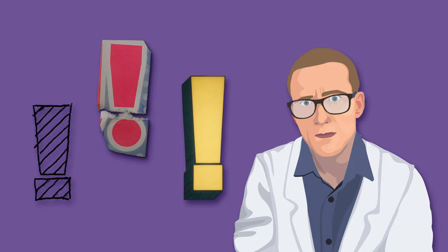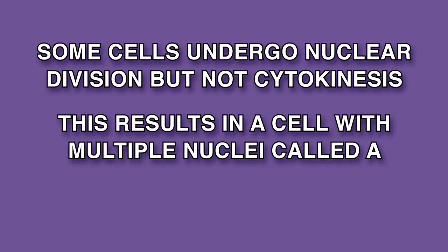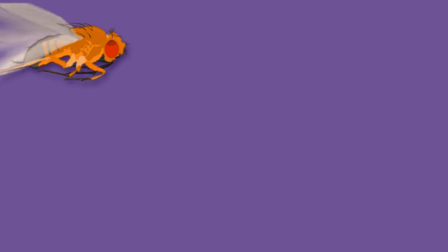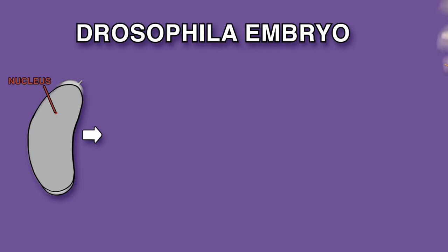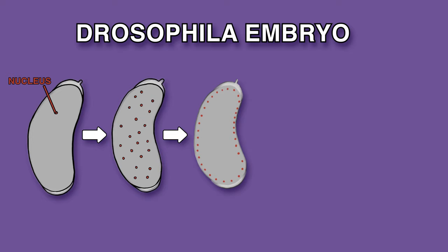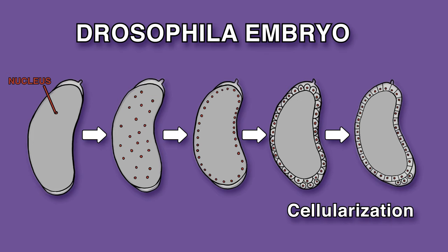Finally, some cells undergo nuclear division but not cytokinesis. This results in a cell with multiple nuclei called a syncytium. An example of this is in the Drosophila embryo, which undergoes multiple rounds of nuclear division. The nuclei then arrange in a monolayer near the surface. Finally, membranes are created around these nuclei through a coordinated cytokinesis process called cellularization.